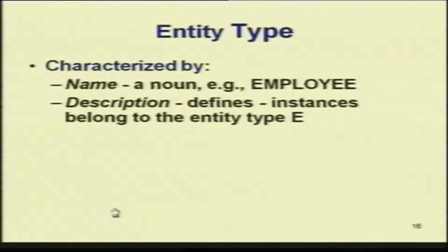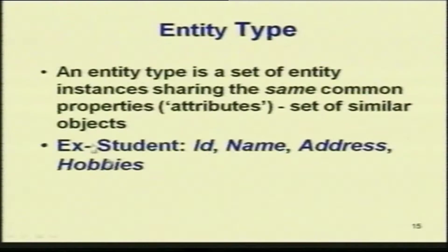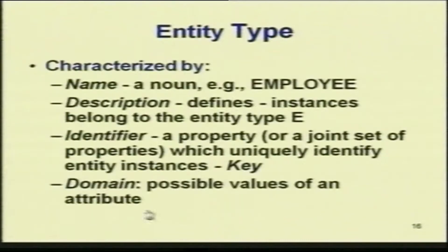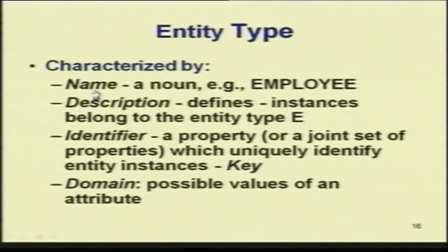The attribute along with the entity name will identify the particular entity type. Entity type is characterized by a name, description, and instances belonging to the entity type which will have an identifier that uniquely determines every instance. For example, the ID is the unique attribute, and a domain specifies the possible values the attribute can have — ID can have numbers, name can have a string, address can have some value, and so on.